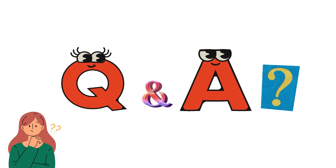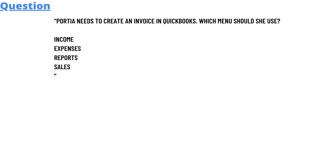Our today's question: Tier needs to create an invoice in QuickBooks. Which menu should be used — Income, Expenses, Reports, or Sales?